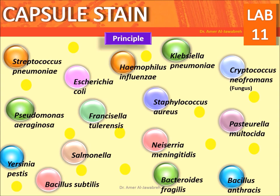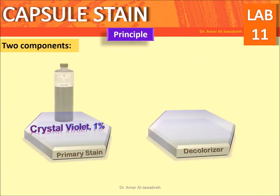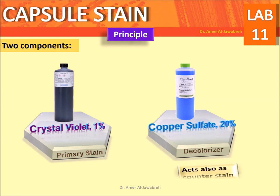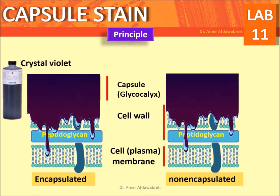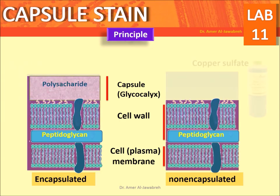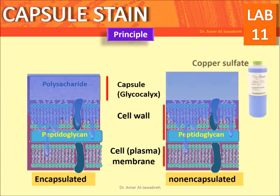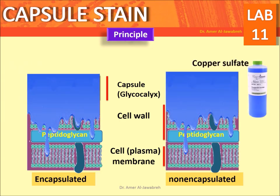The stain has two components: a primary stain of one percent crystal violet, and a decolorizer — 20% copper sulfate — which also acts as a counter stain. When crystal violet is added, all components appear violet. When copper sulfate is added, it decolorizes the capsule and gives it a faint blue color.